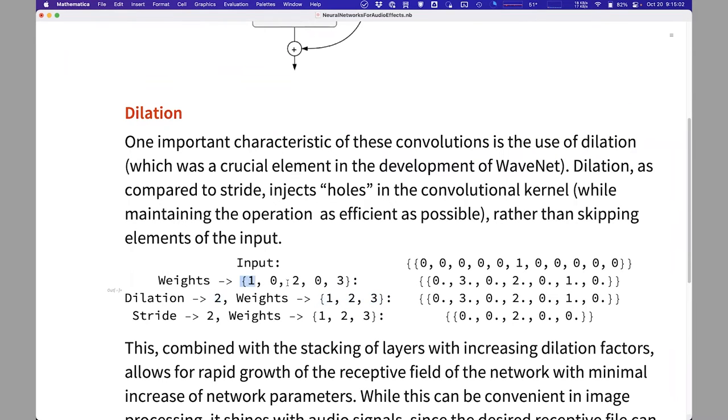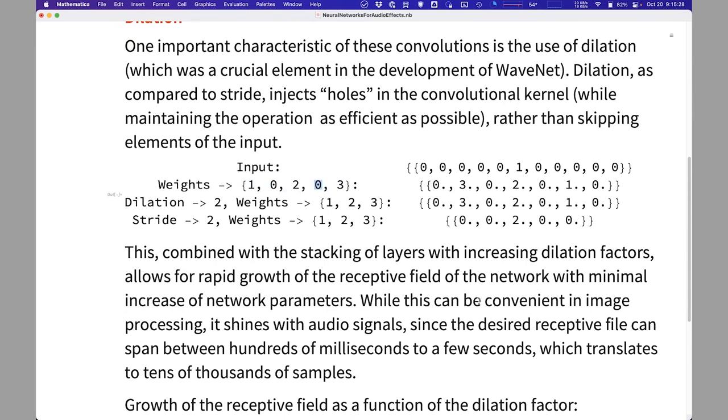is exactly equivalent to a convolution, a normal convolution with the kernel that has one, two, three, but these zeros interjected between the elements. And the operation is kept efficient. We don't do the multiplication by zeros. We just do the multiplication by the actual weights.